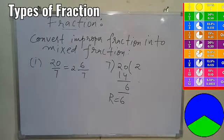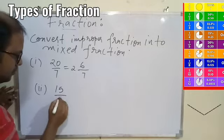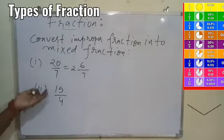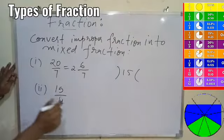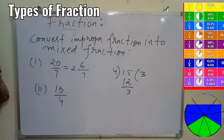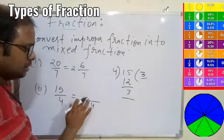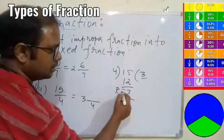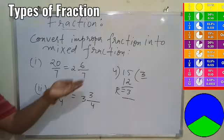Another example: 15/4. Divide 15 by 4 — we can divide 3 times (3 × 4 = 12), remainder is 3. Denominator remains 4, quotient 3 is the whole number, remainder 3 is the numerator. So 15/4 = 3 3/4. That is how we convert an improper fraction into a mixed fraction — divide, find the remainder, and write it in the mixed form.